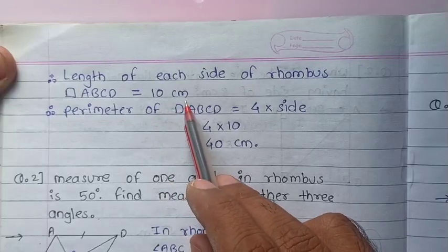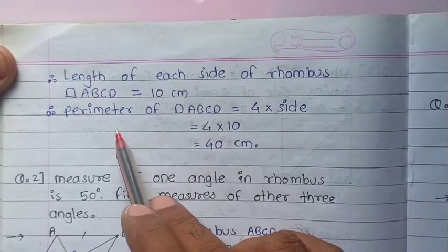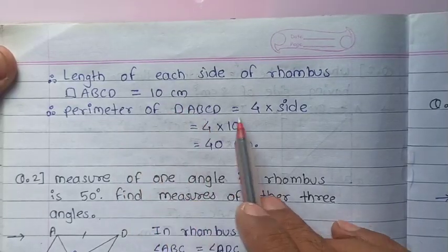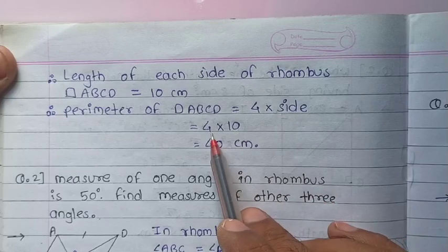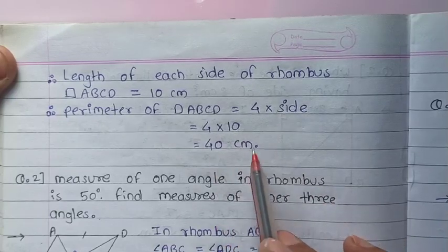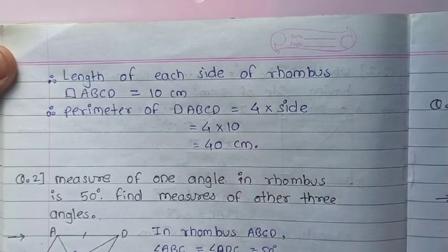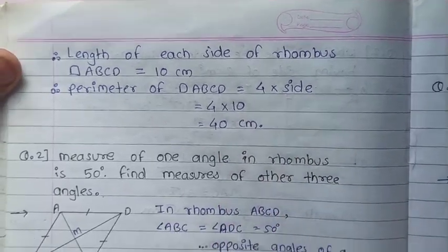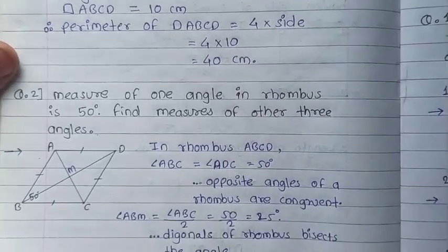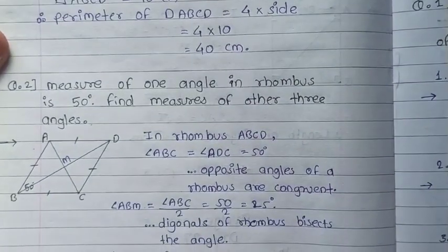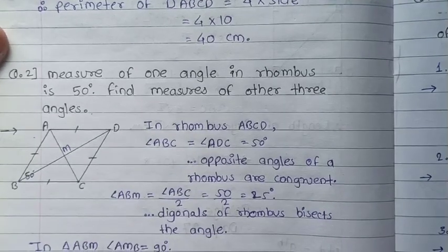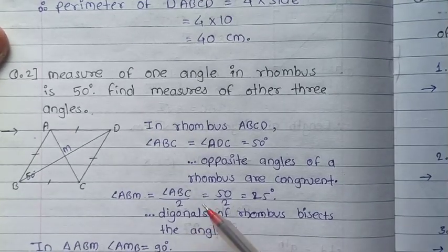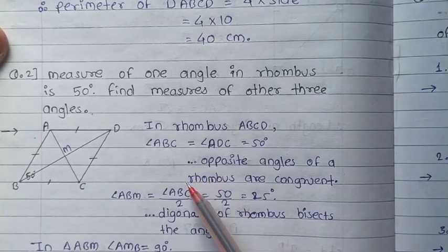Hence the perimeter is equal to 4 times the side, which is 4 times 10, giving 40 cm. Now moving to Question 2: the measure of one angle in a rhombus is 50 degrees — find the measures of the other three angles.